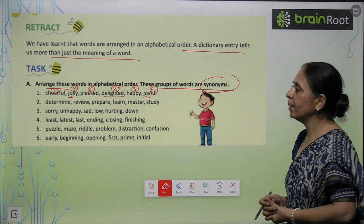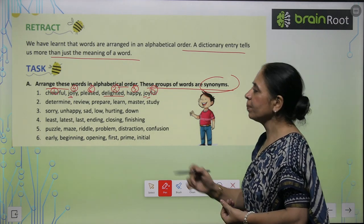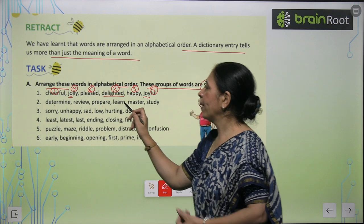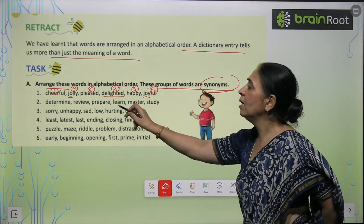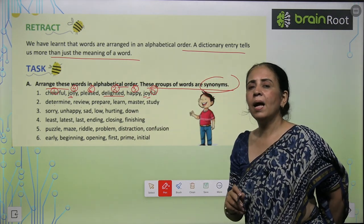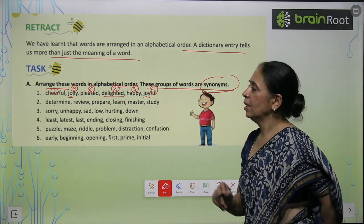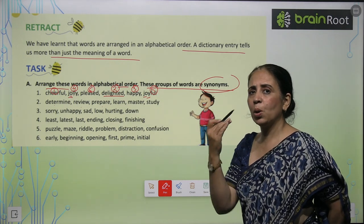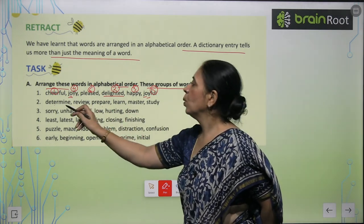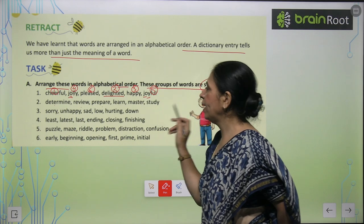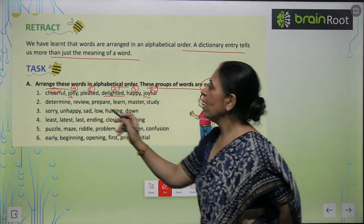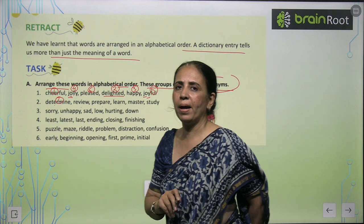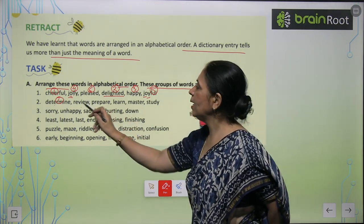Now let's take one more example. We have: Determine, Review, Prepare, Learn, Master, and Study. So you will see that there is no word starting from A to C. Then we have D — Determine — so this is your first number.